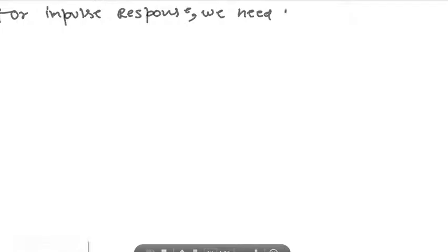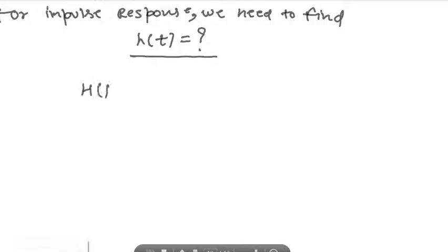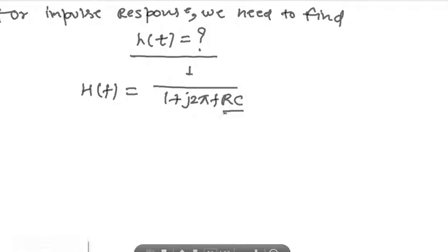Now for the impulse response, we need to find h(t). We have H(f) equal to 1 over (1 + j2πfRC). To find the impulse response, we take RC as a common factor.